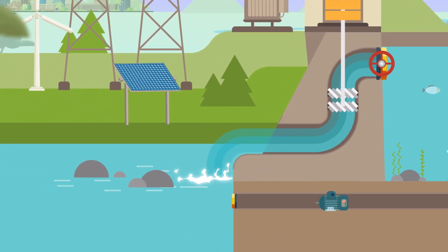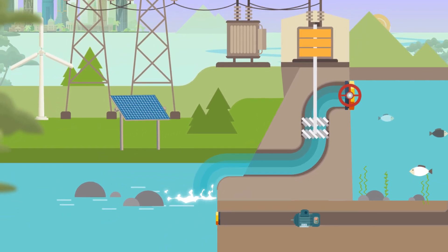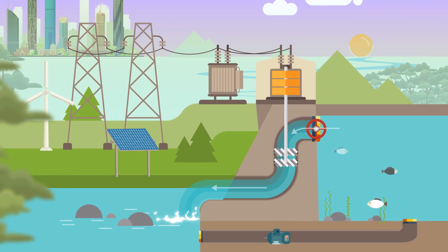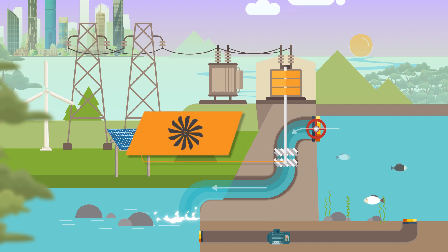As the water flows from the upper reservoir to the lower reservoir, it passes through a turbine, which is connected to a generator. The gravity of the flowing water pushes the turbine, causing it to turn.